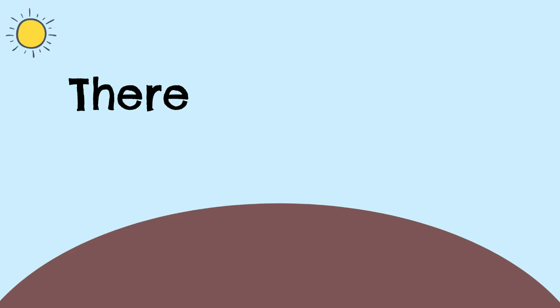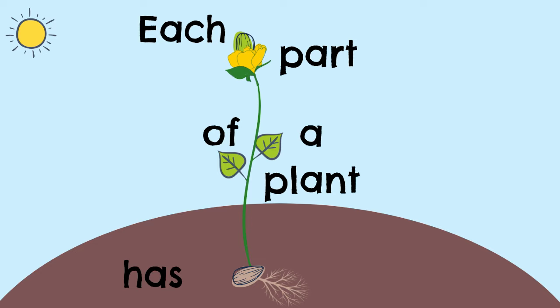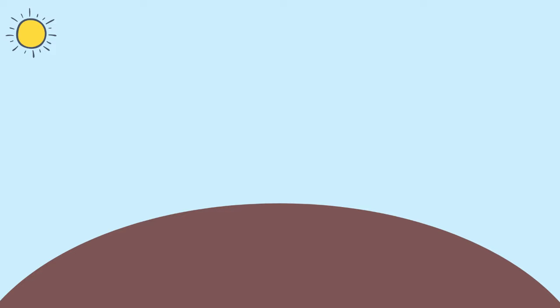There are different parts of a plant. A seed, root, stem, leaves, flower, fruit. Each part of a plant has a purpose. Each part does what it needs to do.